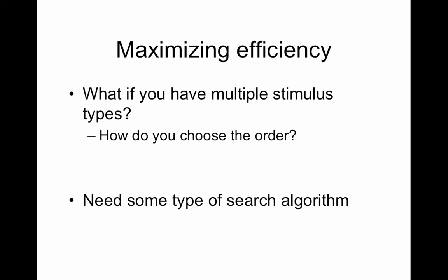What we're going to focus on here is if you have multiple stimulus types, how do you choose the order? The last lecture looked at a MATLAB demo and we saw that we didn't change the order there but we looked at how jittering affected efficiency.